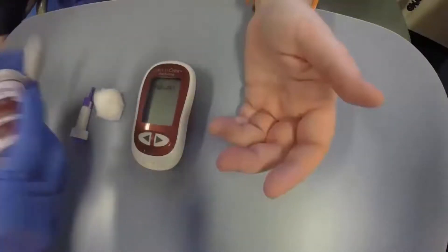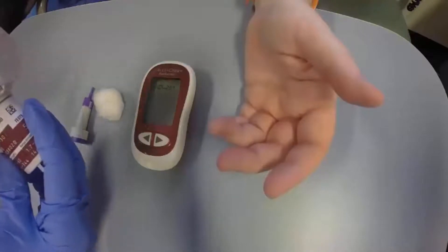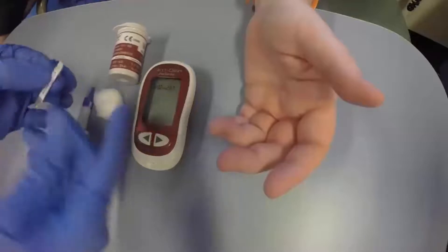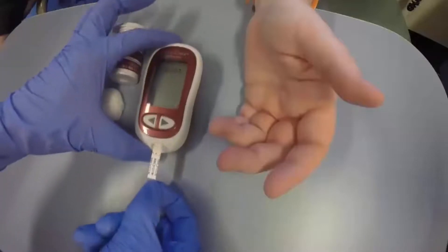Place the regent strip into the glucometer as indicated at the bottom of the machine. There is a space for this to occur.